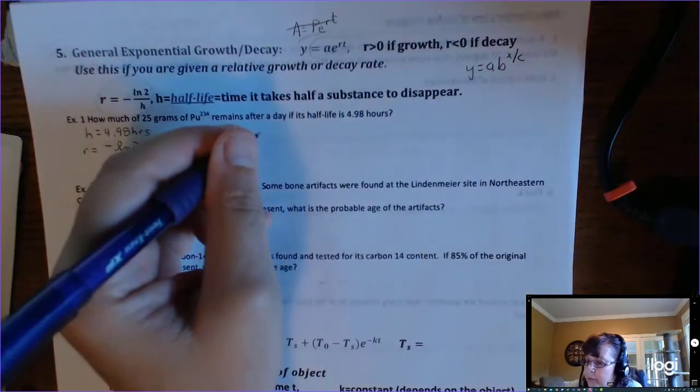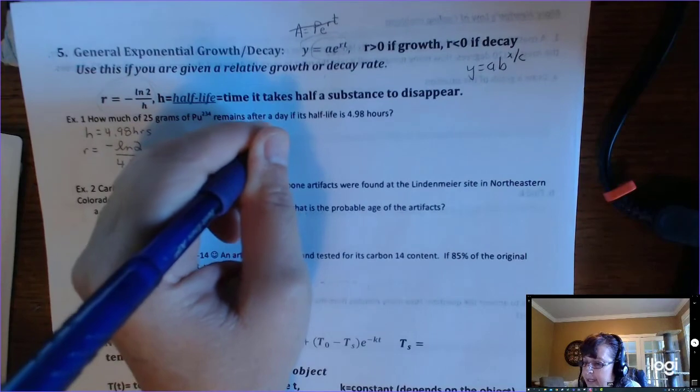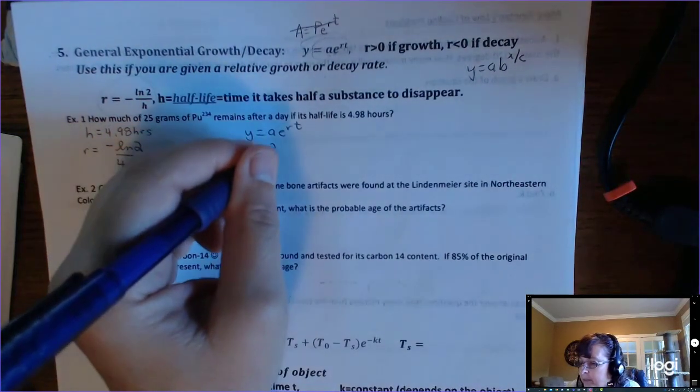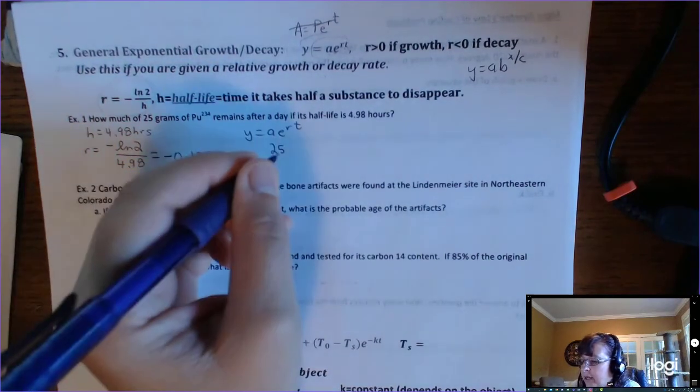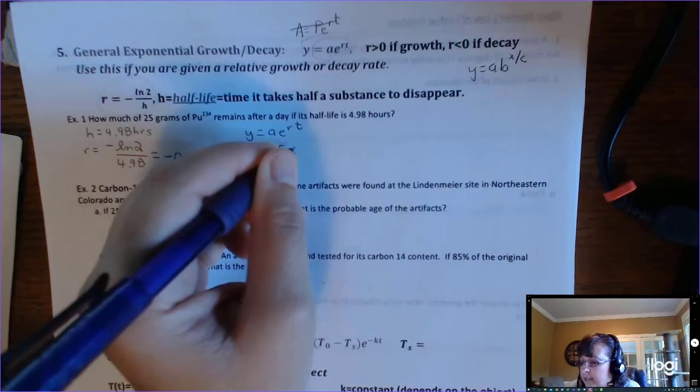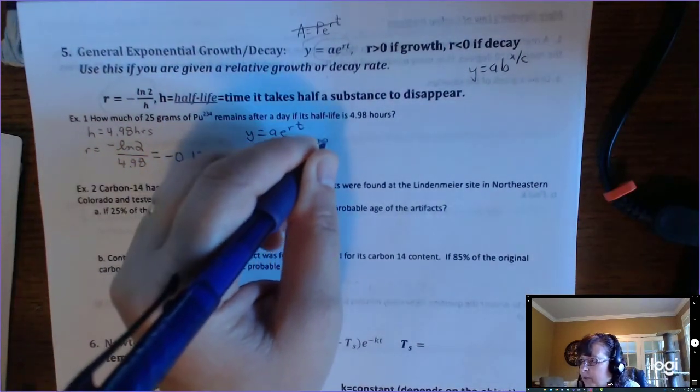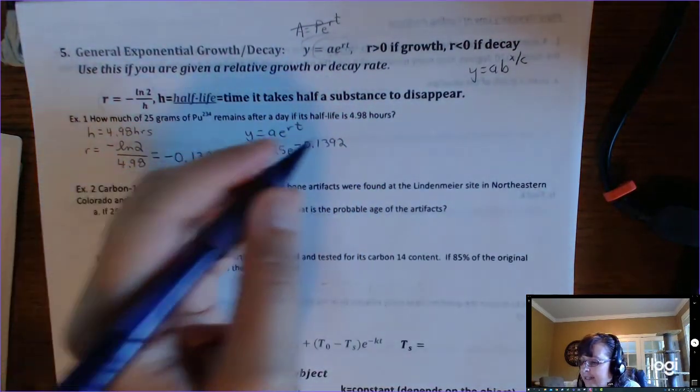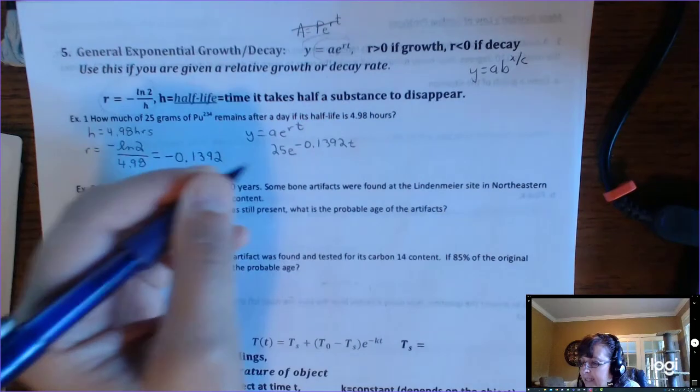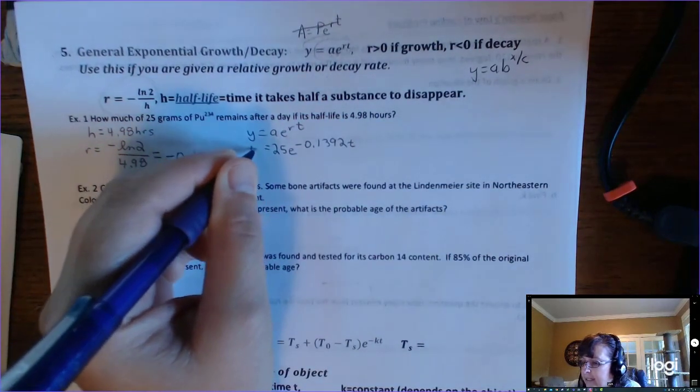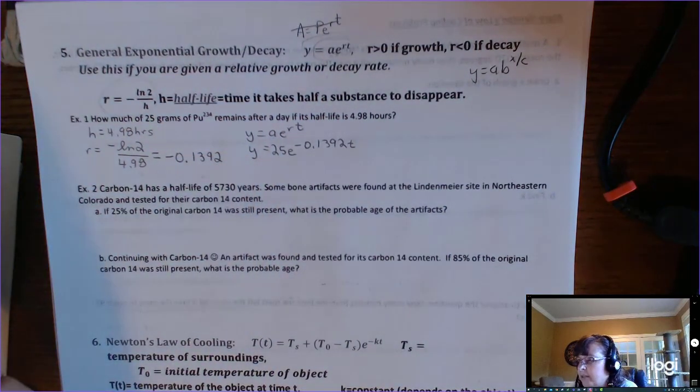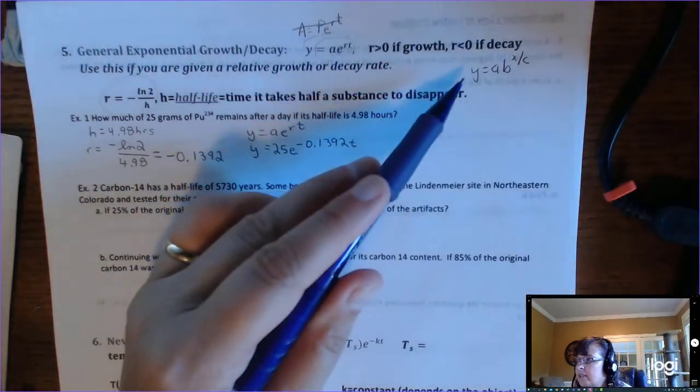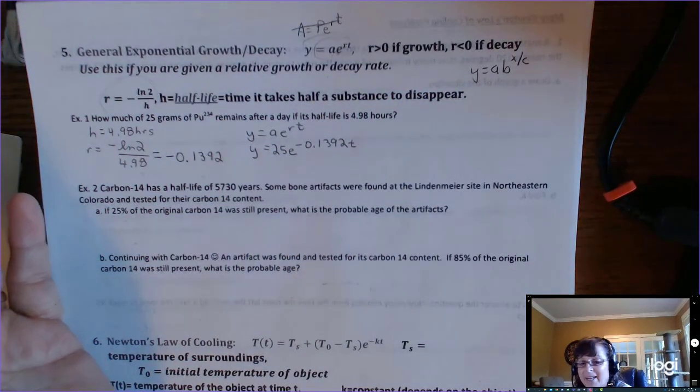Okay, so now if I use Y equals A, E to the RT, how much of 25 grams? That means 25 is my initial value, E, negative 0.1392 T, and then equals Y. So that's your formula. Notice that it's negative. R is negative. That means that it's decay, which makes sense because we're talking about a half-life problem.